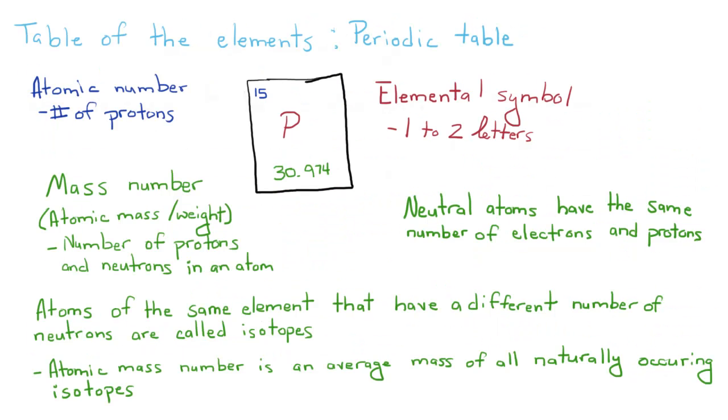When you look at a periodic table you're going to see the elemental symbol, the atomic number which is the number of protons, and the mass number. The atomic number is normally in the top left, the elemental symbol is going to be in the middle, and the mass number is going to be at the bottom. The atomic number is going to define the element. An element is defined by the number of protons it has. If you change the number of protons, you change the element.